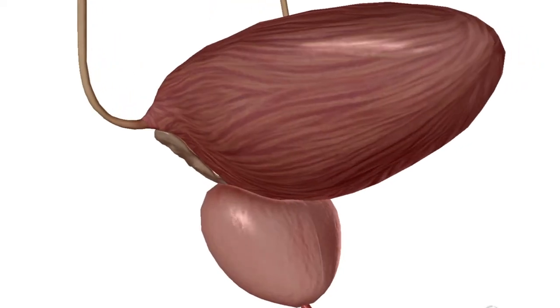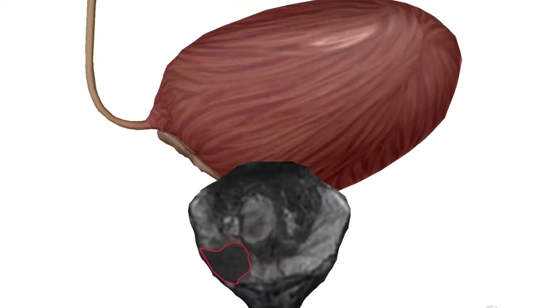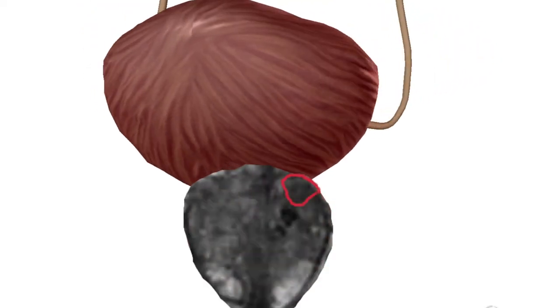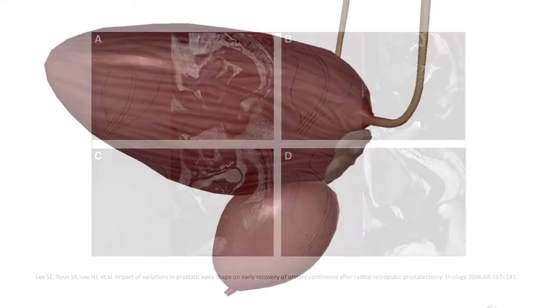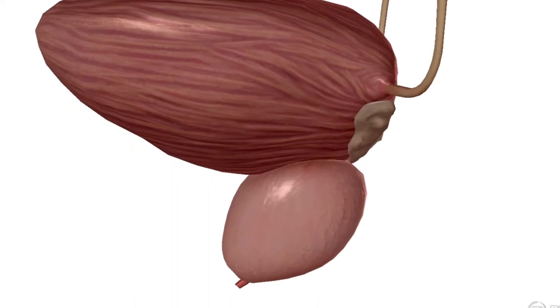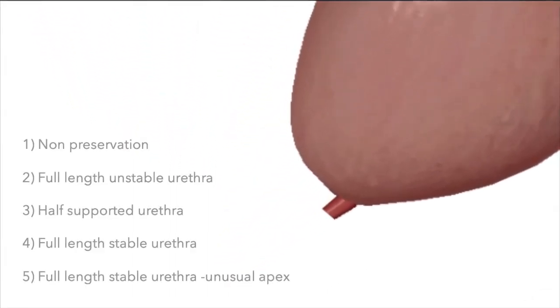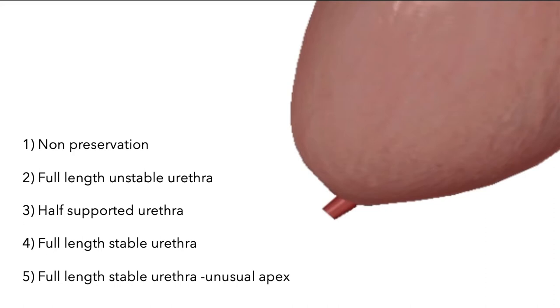These modifications can be limited by tumor location and patient anatomy, particularly at the apex. In this video we show different surgical scenarios we might face while planning the applicable approach in a robotic assisted radical prostatectomy.